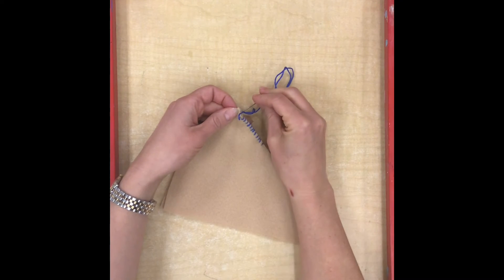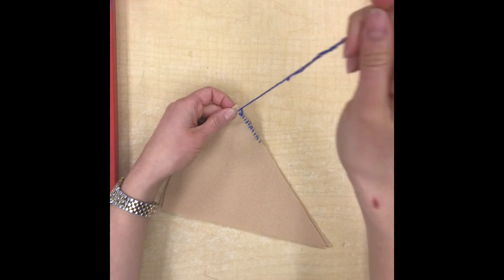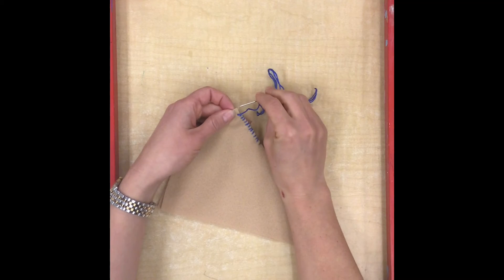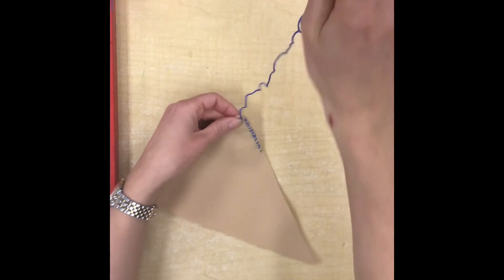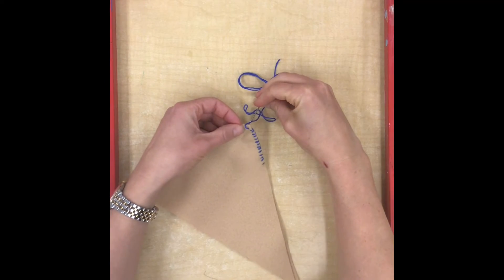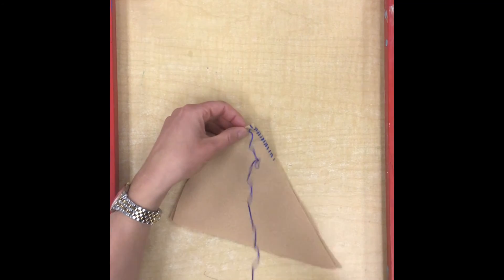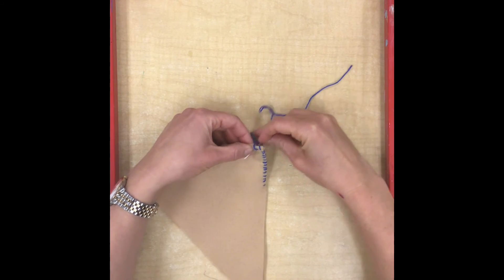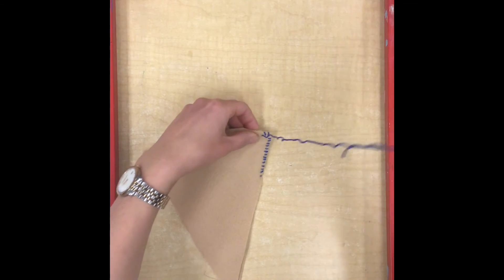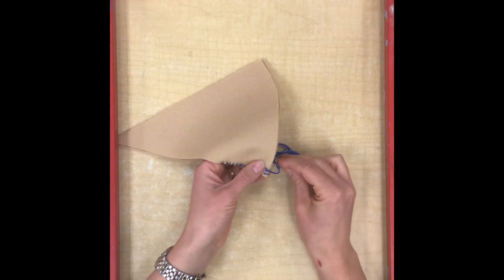So the closer you make your stitches, the better. When you get to a corner you're just going to kind of go around the corner like so, and I am just going to keep on going making my stitches until I run out of thread.